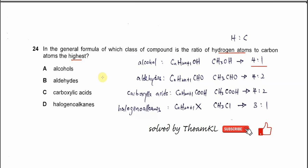For aldehyde, the general formula is CnH2n+1CHO. Let's use ethanal, CH3CHO. And the ratio between these hydrogens and carbons is 4 to 2, so 4 hydrogens and 2 carbons. The simplest ratio is actually 2 to 1.